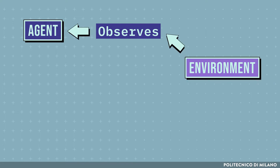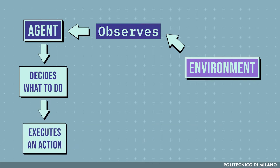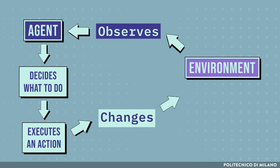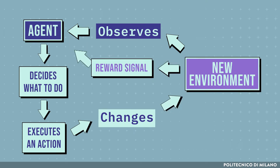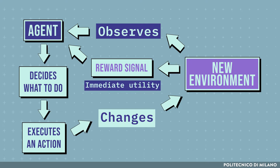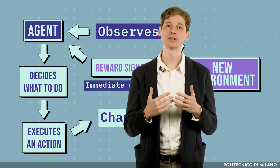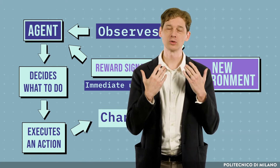The reinforcement learning process can be modeled as an iterative loop that works as follows. First, the agent observes the environment to understand what state it is in. Then it decides what to do and executes an action. As a result of this action, the environment changes and the agent receives a reward signal. The reward is a value that specifies the immediate utility of the executed action in that specific state. This completes one iteration, and the next one starts with observations gathered from the new state of the environment.